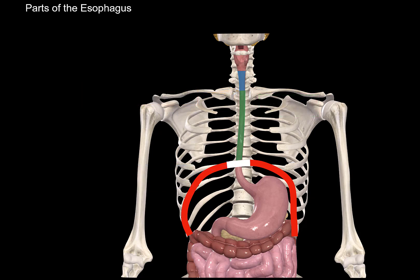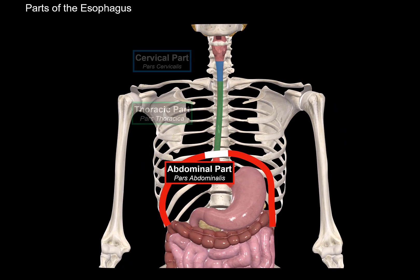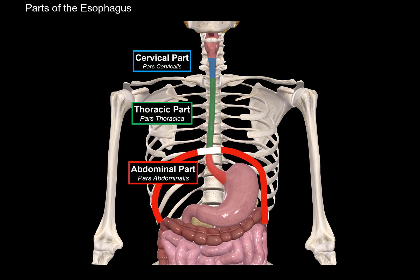After the thoracic part has gone through the diaphragm and enters the abdominal cavity, it becomes the abdominal part, which starts at the esophageal hiatus and ends at the cardiac orifice of the stomach. So that was all three parts of the esophagus.